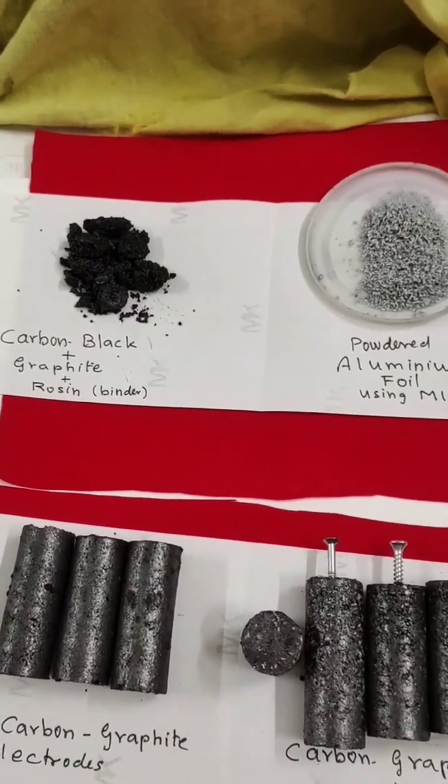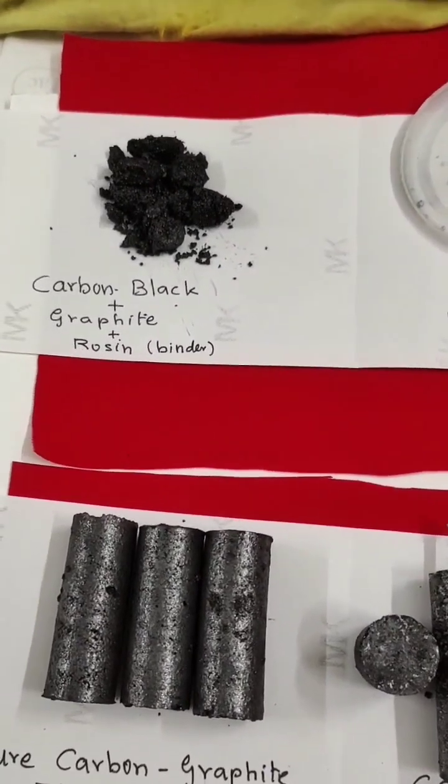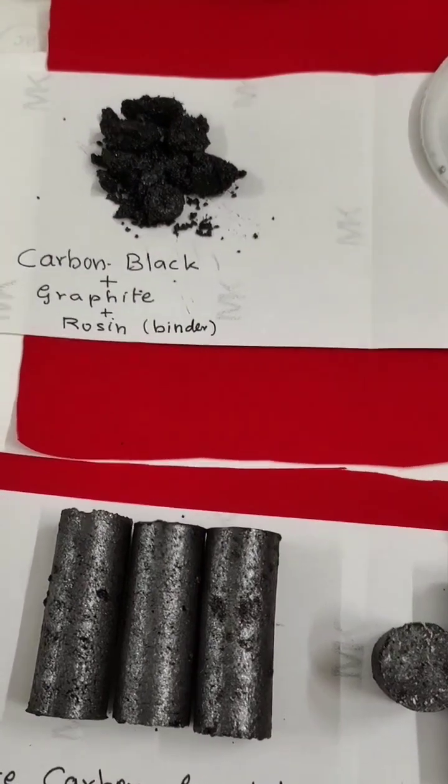Friends, for preparing this aluminum carbon embedded ion battery, I have taken carbon black plus graphite mixed with rosin binder. You're able to visualize this.